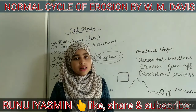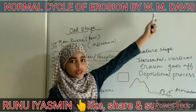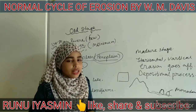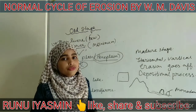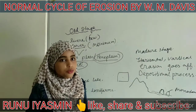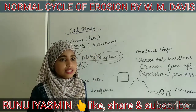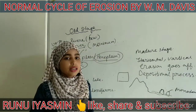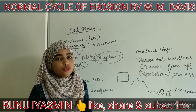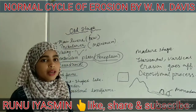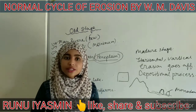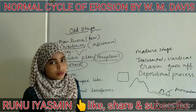We have been discussing the normal cycle of erosion given by W.M. Davis. There are many importances of this theory — it properly explains the changing process of landforms sequentially into three stages: the old stage, mature stage, and young stage. It is a very simple way to learn about landforms, which is why it is very famous and everybody can understand it. But yes, there are also some limitations of this model of the cycle of erosion.